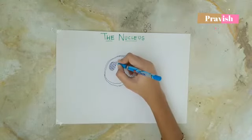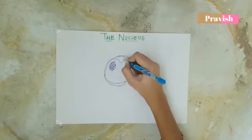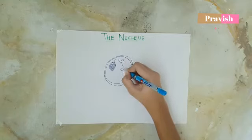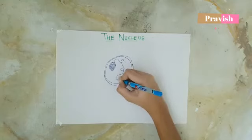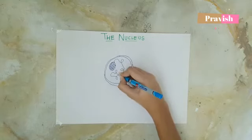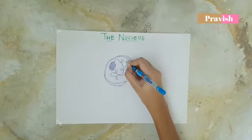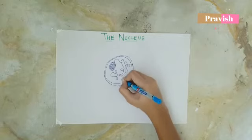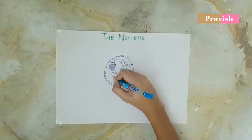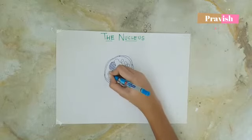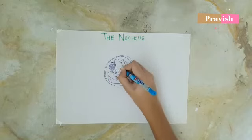Then, there is also another thread-like structure known as the chromatin. This chromatin contains the genetic information about the cell.